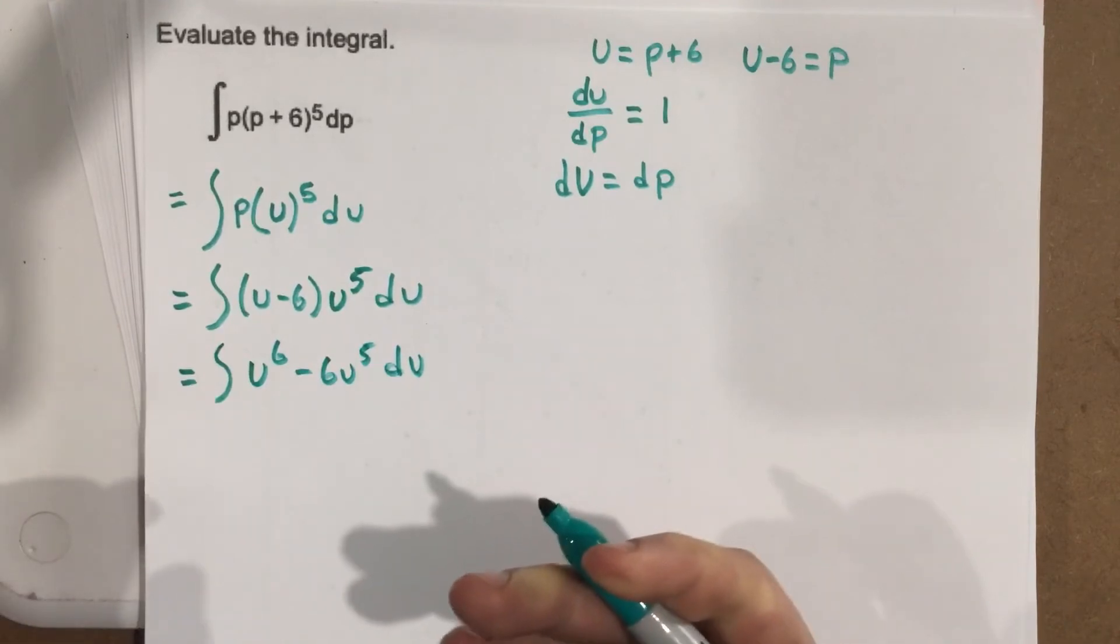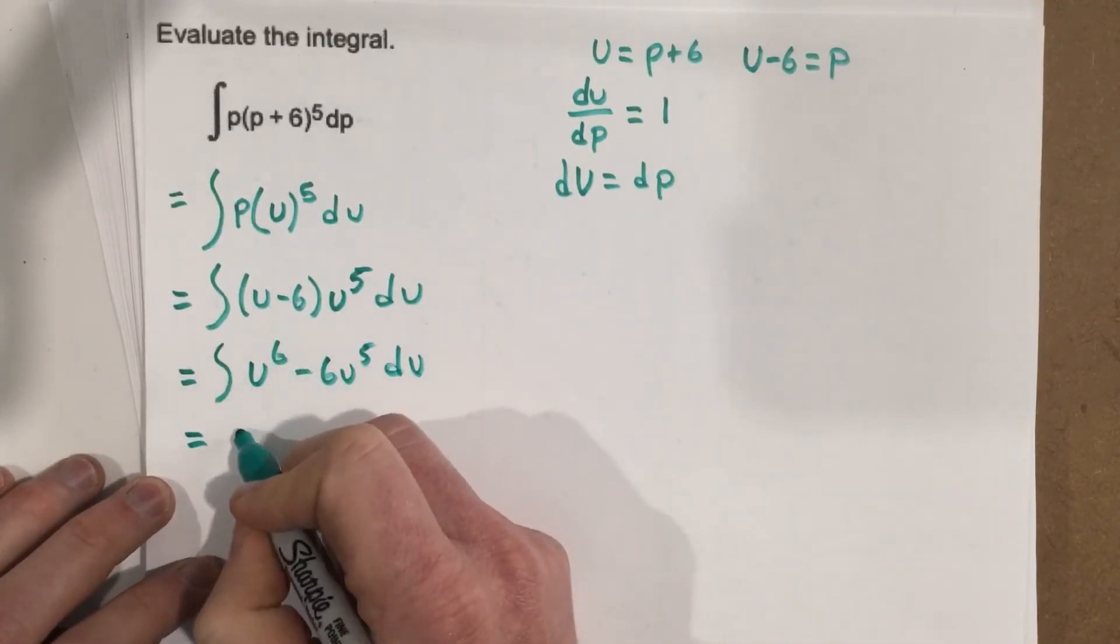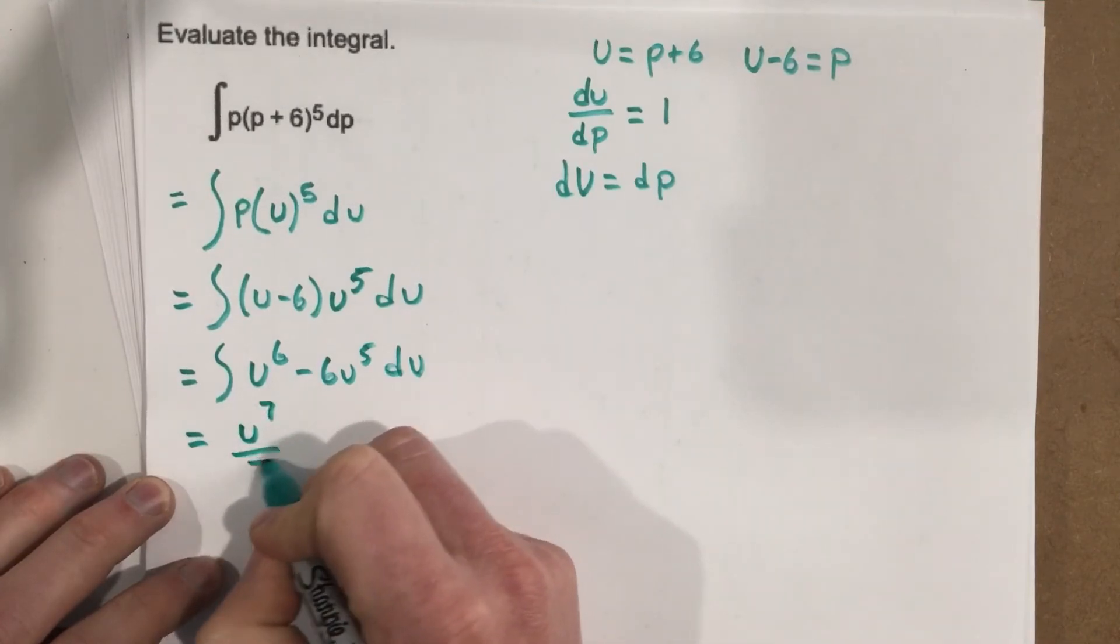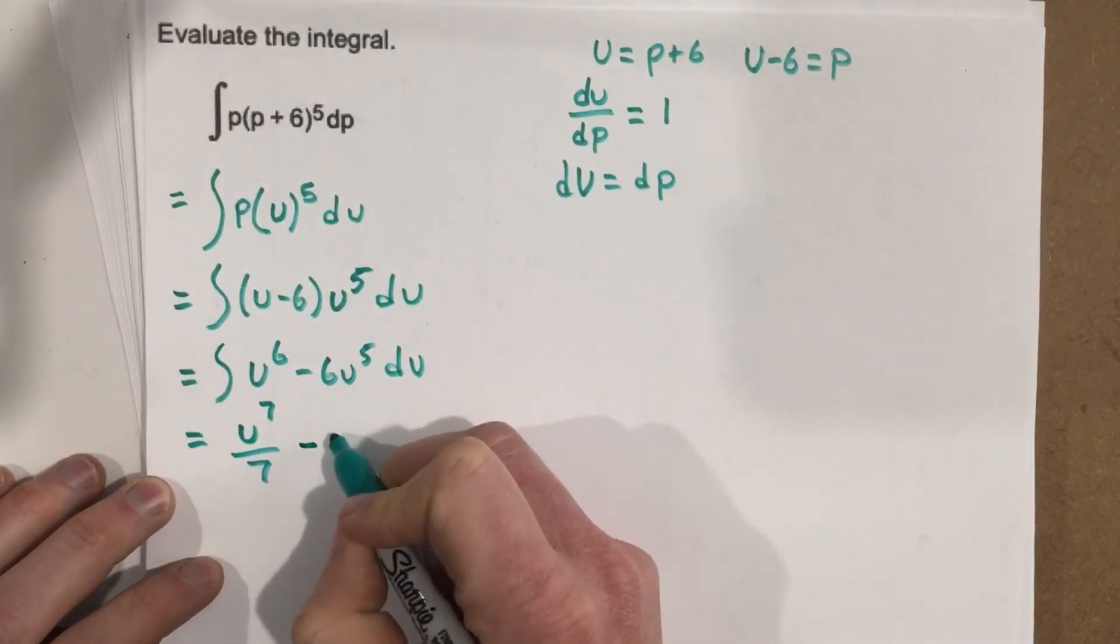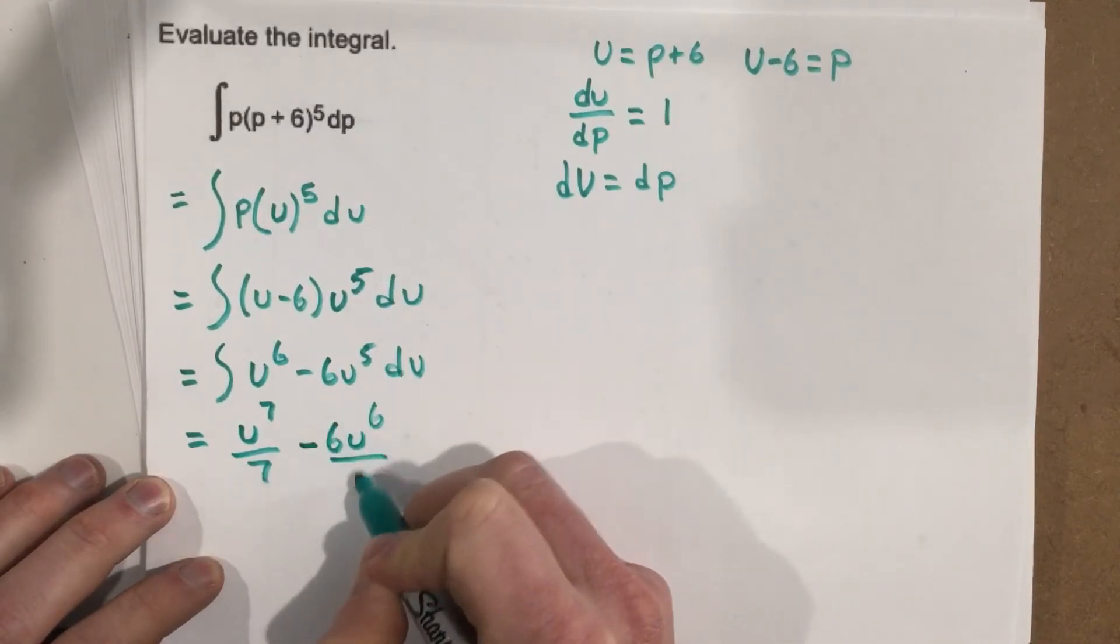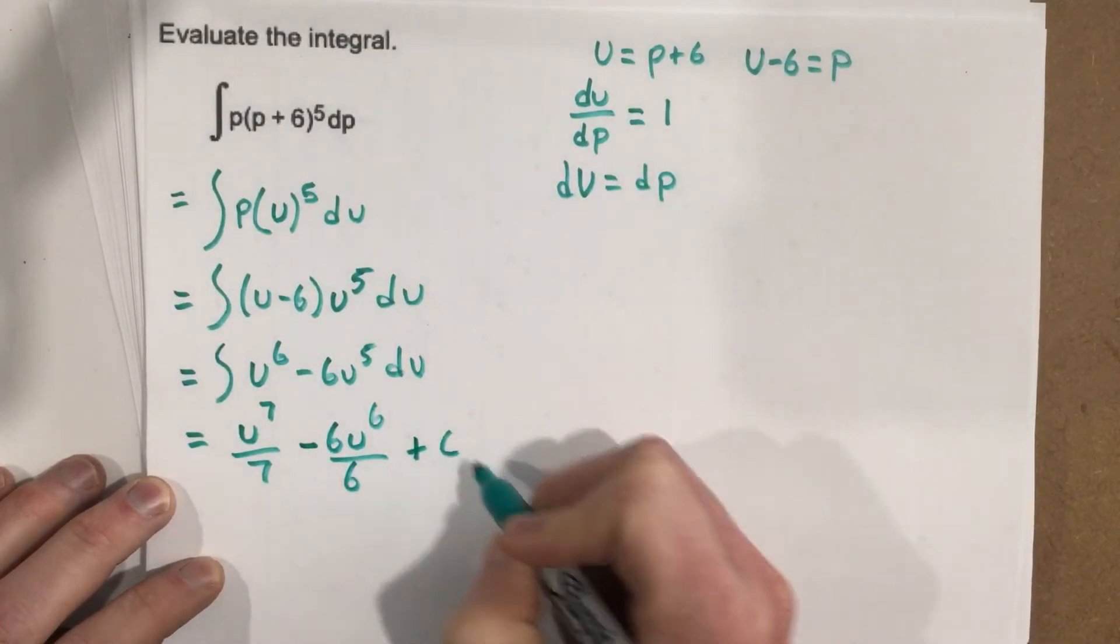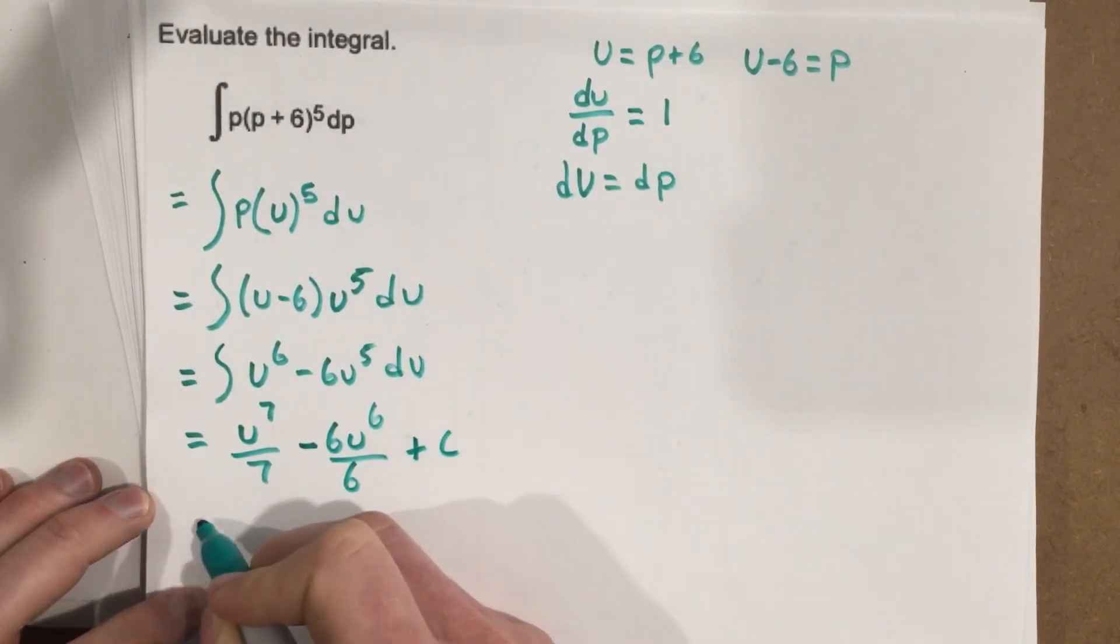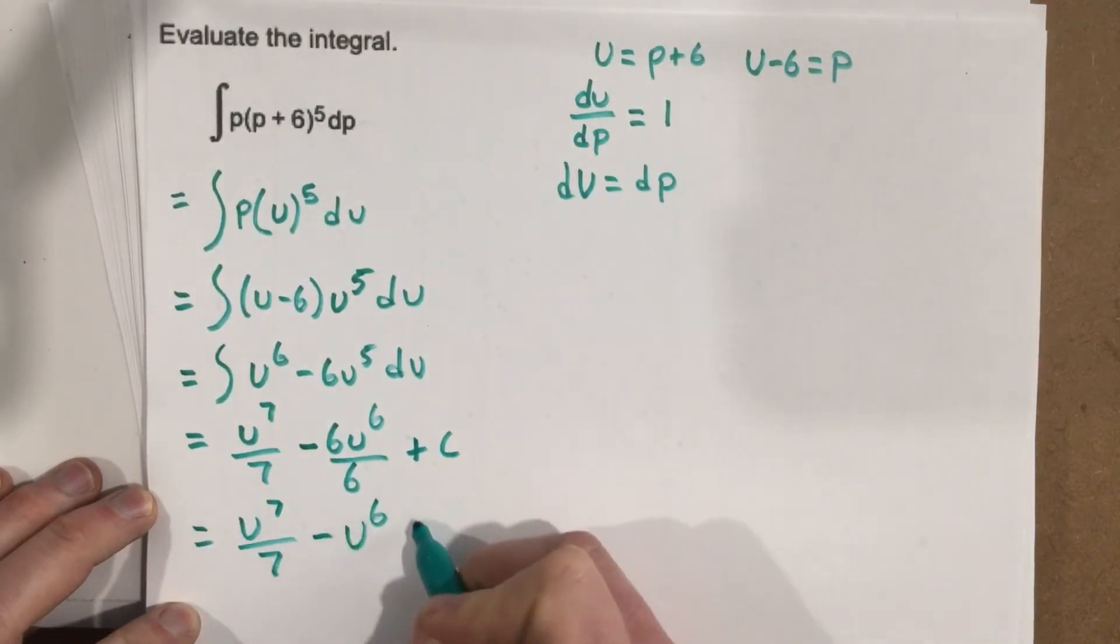So if we integrate this, this is a pretty easy integral for us. We know that we add one, so we get u to the 7th over 7, minus 6u to the 6th over 6, and then we say plus c. We can go a little further and say u to the 7th over 7 minus u to the 6th plus c.